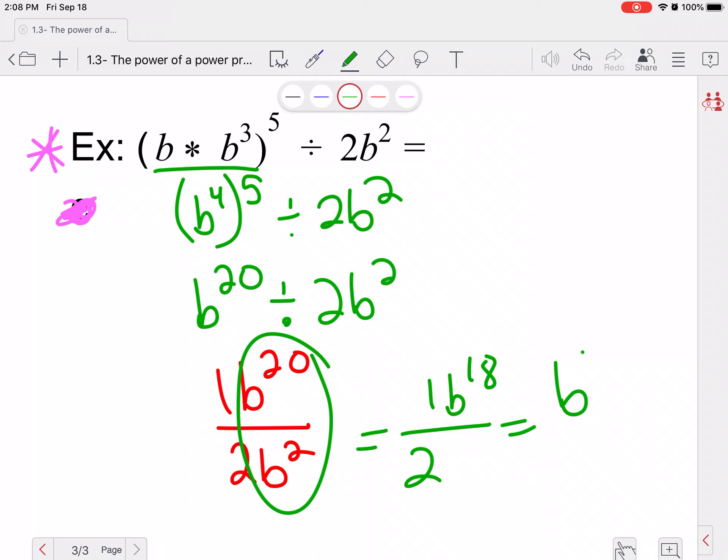Or I could write this as B to the 18th over two. Those would be equivalent answers. So when we see a division symbol like this, I would go ahead and write it as a fraction just to help you out a little bit.